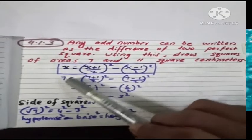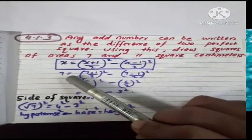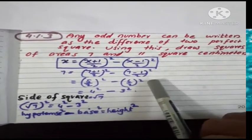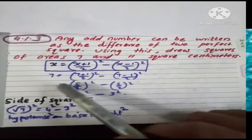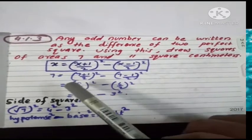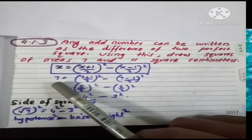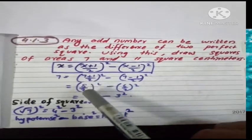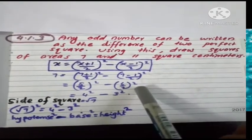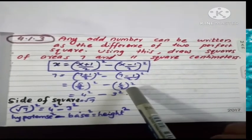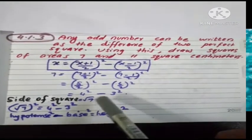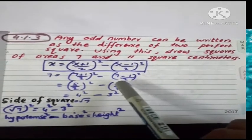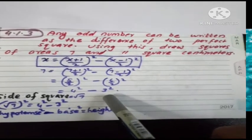7 equal to 7 plus 1 by 2 whole square minus 7 minus 1 by 2 whole square. That is 7 plus 1 equal to 8 by 2 whole square minus 7 minus 1 equal to 6 by 2 whole square. That is 8 by 2, 4, 4 square minus 6 by 2, 3, 3 square.